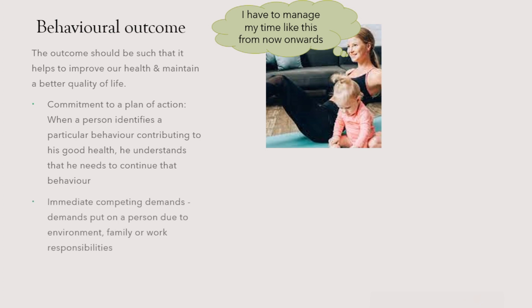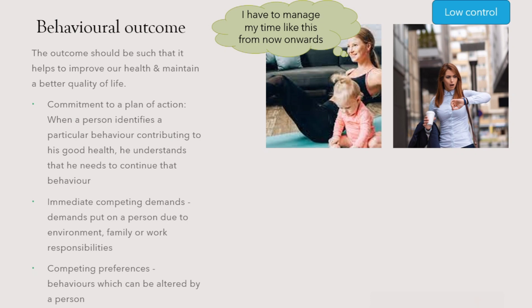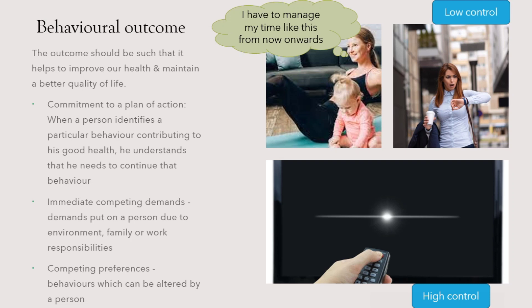We also have immediate competing demands and competing preferences. Immediate competing demands are demands put on a person due to environment, family, or work responsibilities — like when the working mother has a presentation scheduled at the exact time of her exercise, so she cannot maintain her routine. People generally have low control over these. Competing preferences are behaviors that can be altered by the person, so people have high control over those — for example, choosing to manage exercise time instead of watching a favorite TV show that airs at the same time.